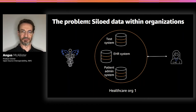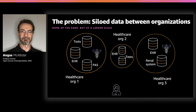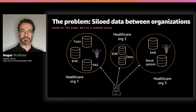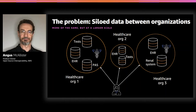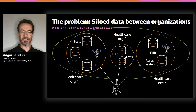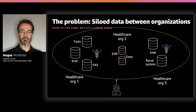It's bad enough in single organizations, but when data is spread across multiple organizations it gets even harder. Whilst there may be a single interface to get data from each individual organization, when you want to get data from several at once — say, in the context of a patient receiving care at different organizations — you have the same problem at greater scale. What you really want is that single place to get all the data you need relating to that patient.